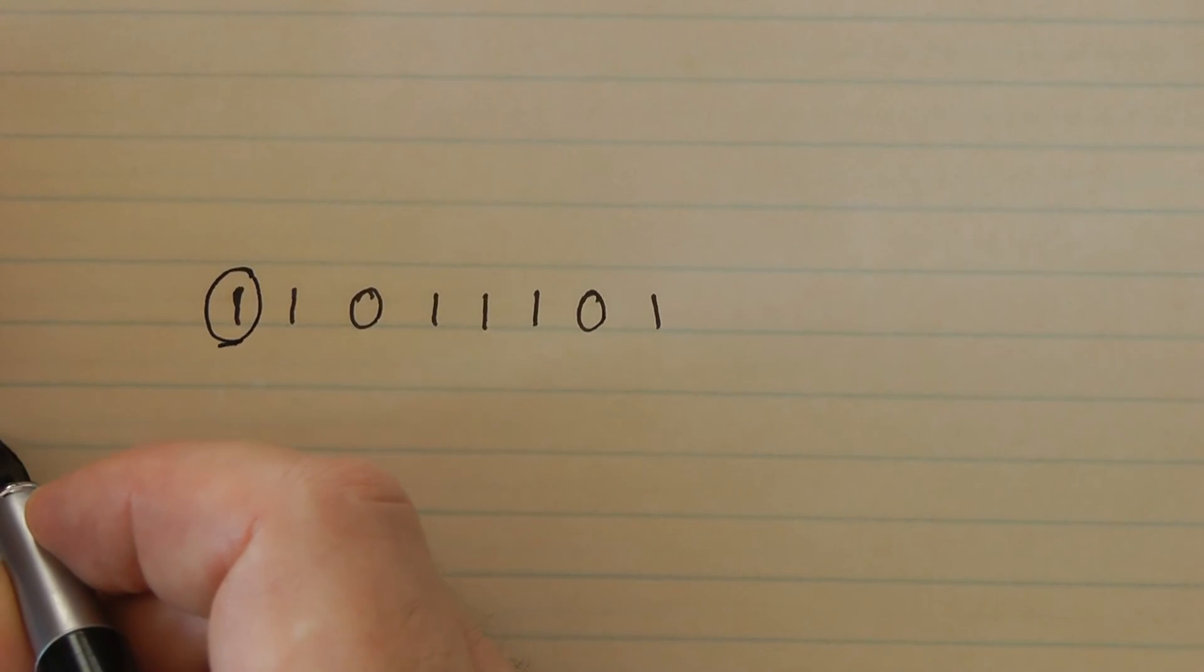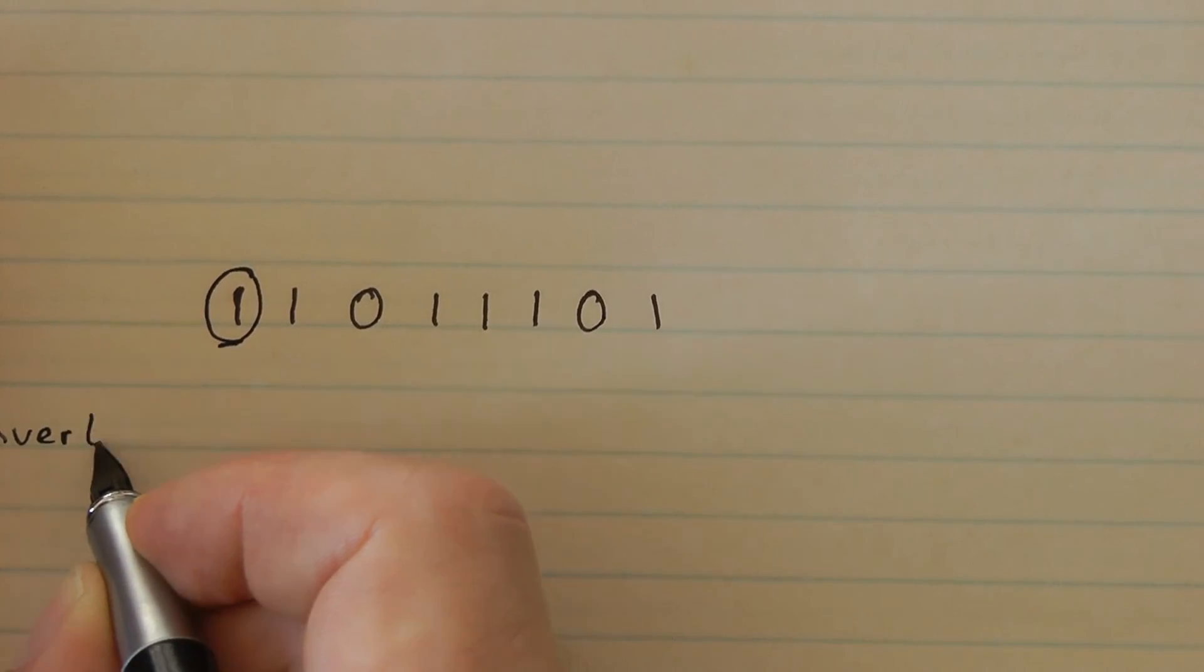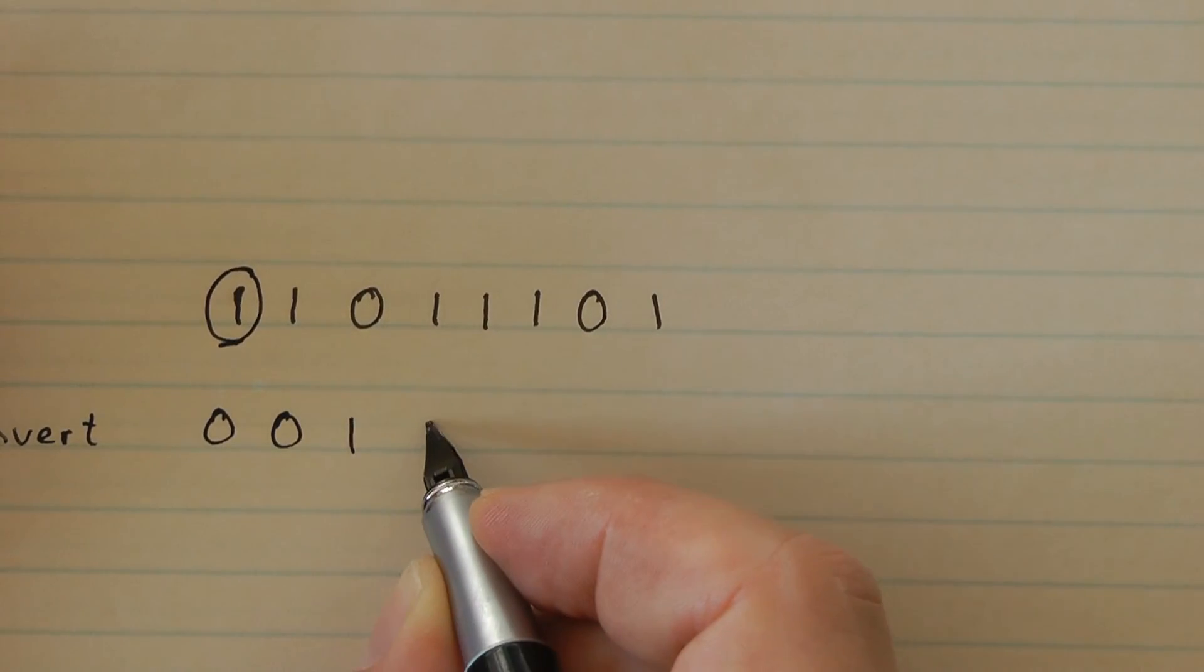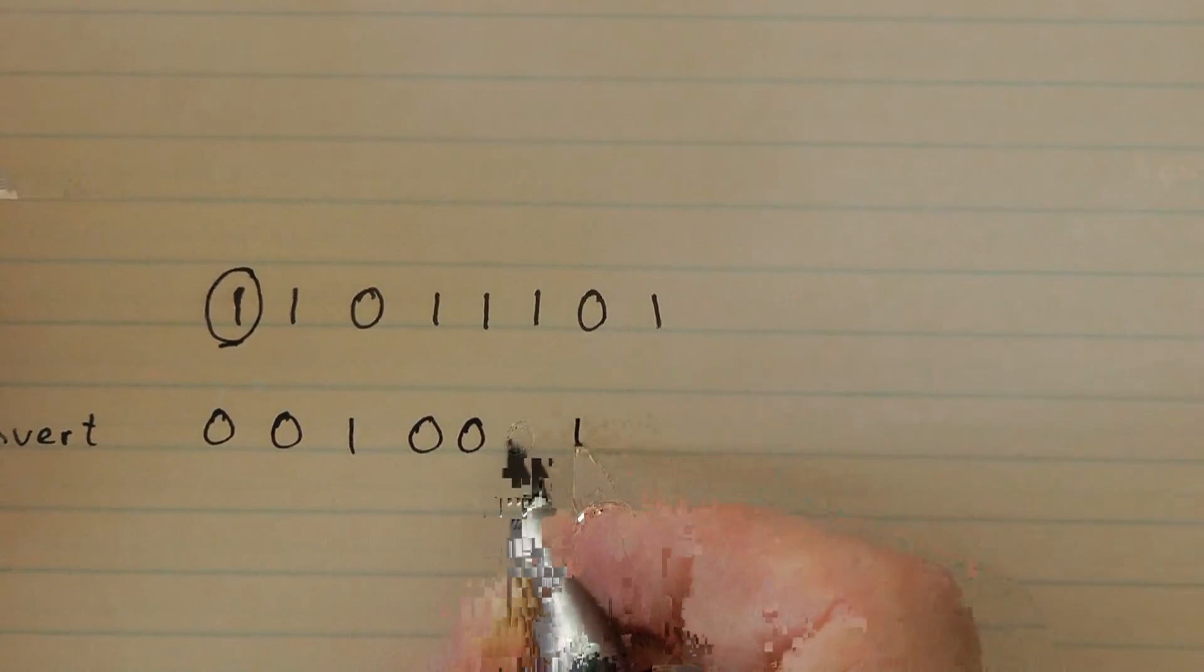So what we now need to do, we need to invert. It's going to be 0, 0, 1, 0, 0, 1, 0.